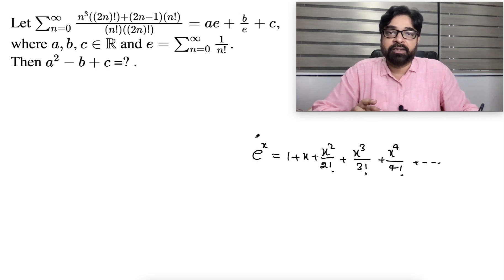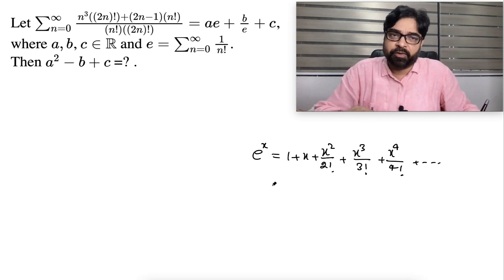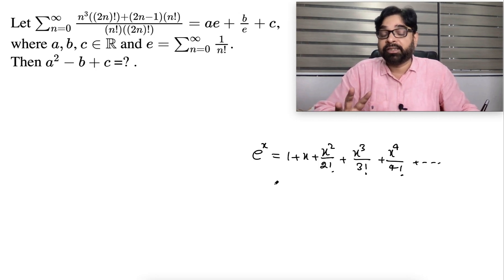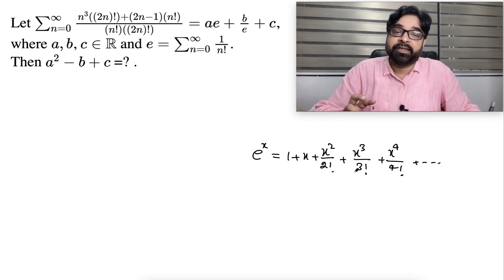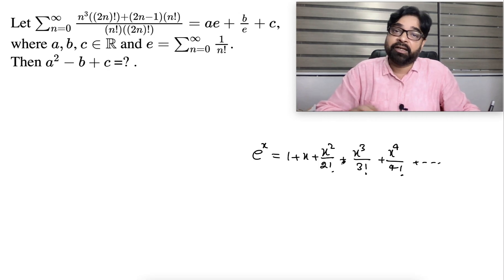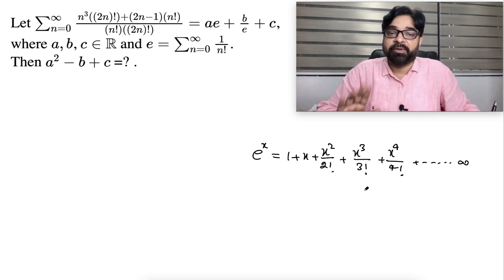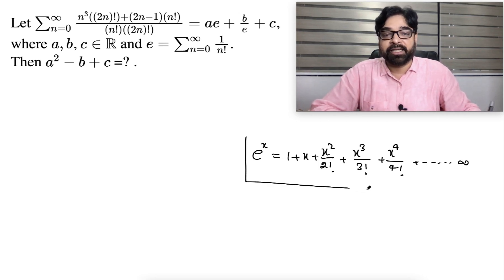Using Taylor's method we write this series. Similarly, sin x and cos x series exist. You can express any function in terms of a polynomial, but when converting a function into a polynomial, the number of terms will be infinite, not finite. This is the e^x series.